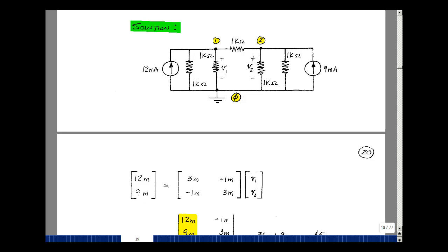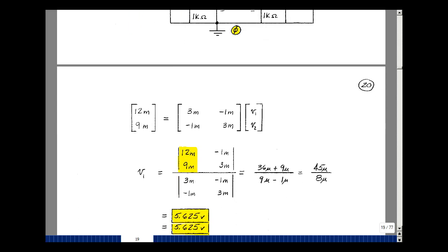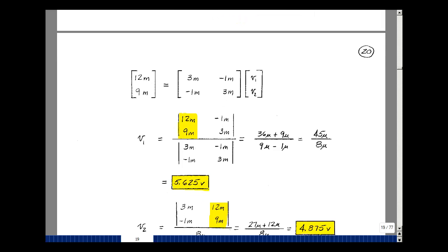Let's use Cramer's rule now to find V1 and V2. We take the column associated with V1, replace it with the right-hand side of the equation — 12 milli and 9 milli — and divide by the determinant. So I get 3 milli times 3 milli, which is 9 micro... this times this is 36 micro, then minus a minus, so plus 9 micro, minus 1 micro. I get 45 micro over 8 micro, and that turns out to be 5.625 volts.